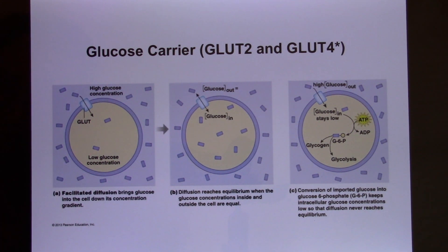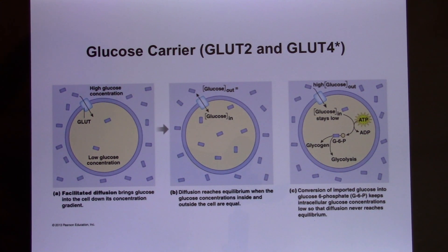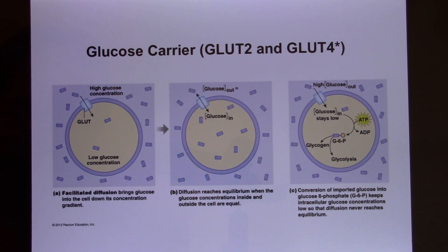The beta cells in the pancreas are supposed to release insulin, so when they're destroyed, no insulin is produced. Diabetes Type 1 patients have to self-inject insulin after every meal. It's usually identified when patients are quite young. Diabetes Type 2 is insulin insensitivity. Diabetes Type 1 is nature (genetic); Diabetes Type 2 is nurture (environment).